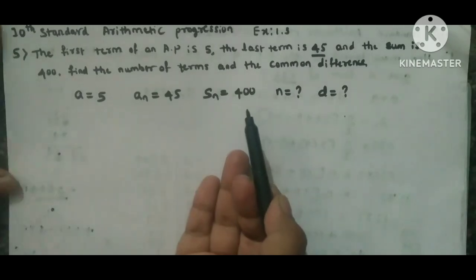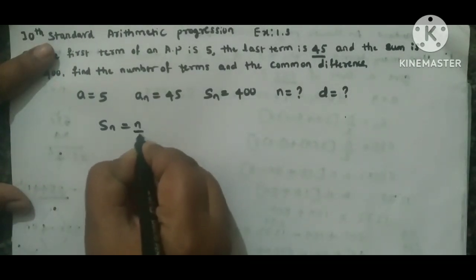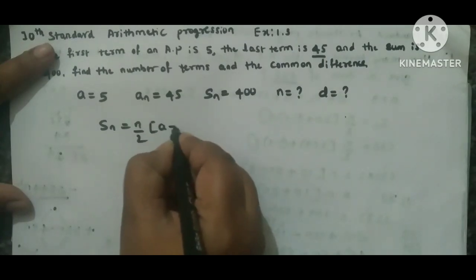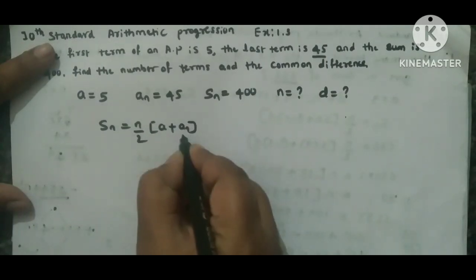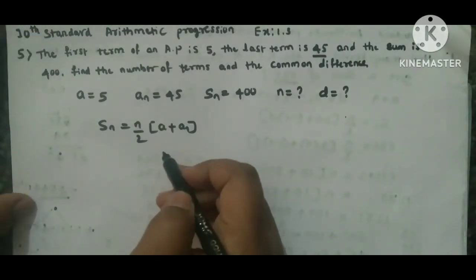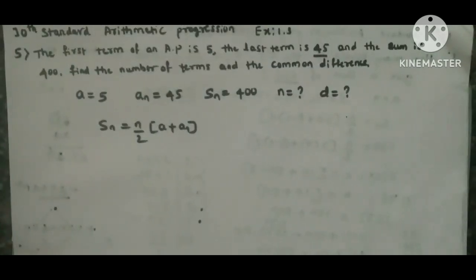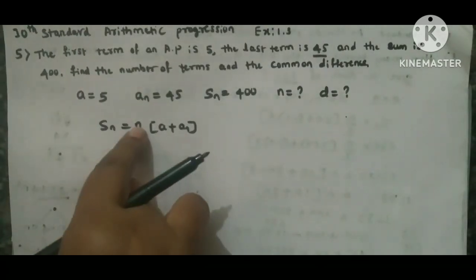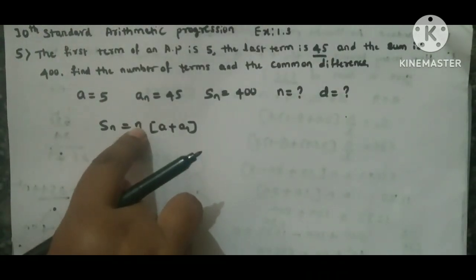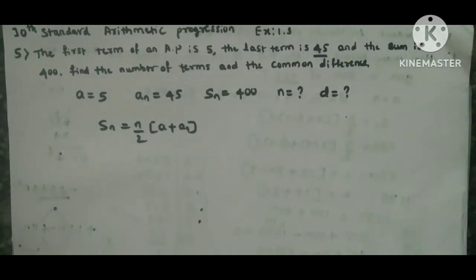Or in place of an we can write l also, means last term, always represented by an or by l. So this is the formula. Using this formula we'll find n first, then using n, a, and an, we can find the d value using an formula.